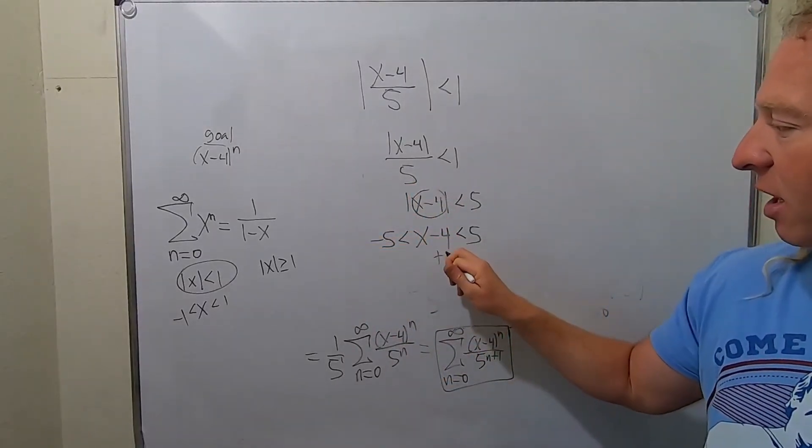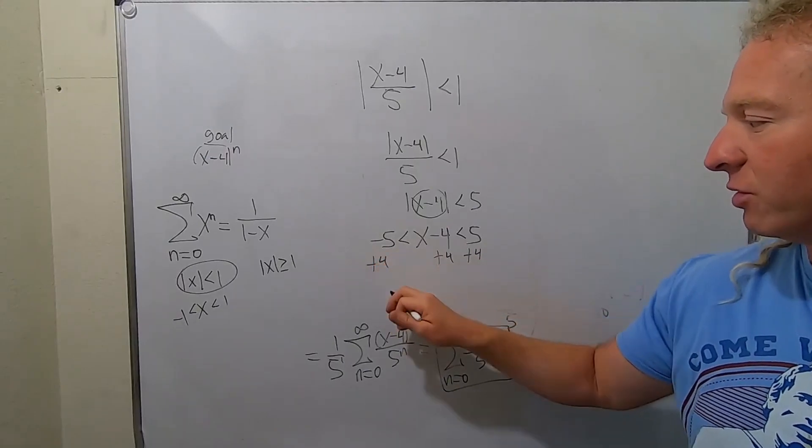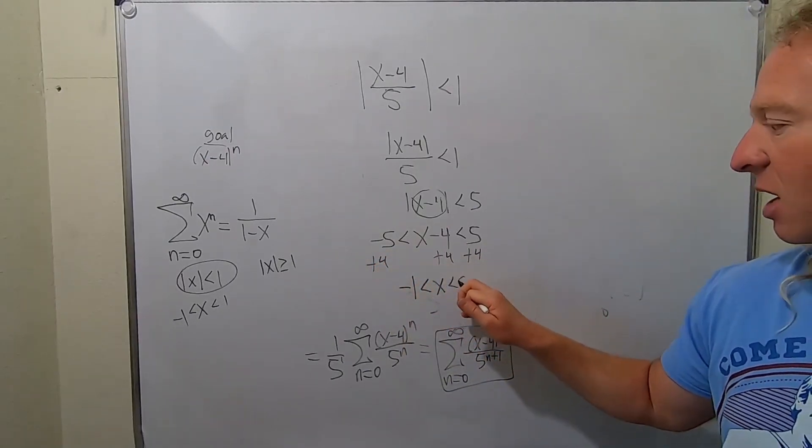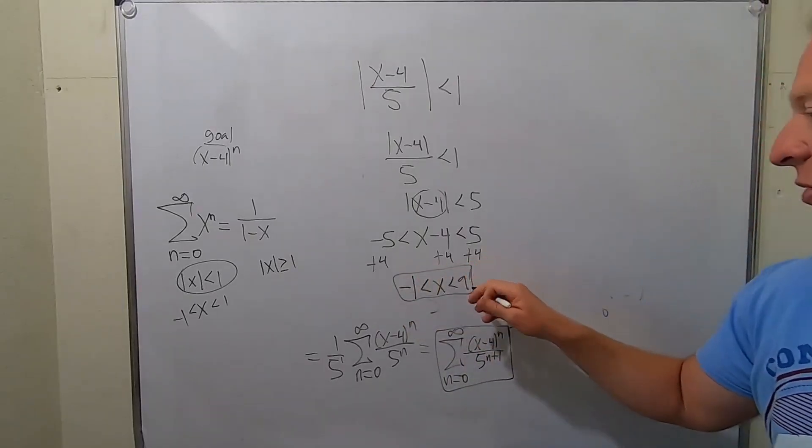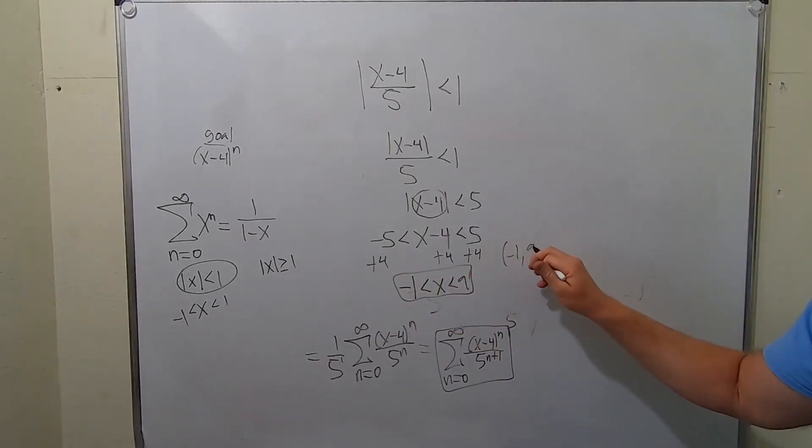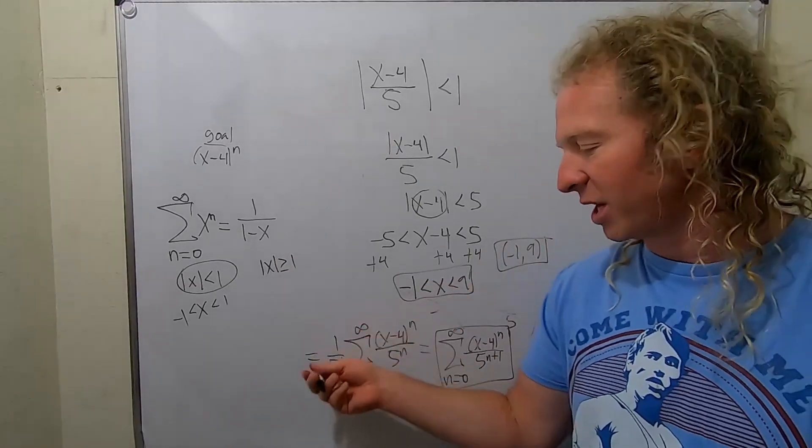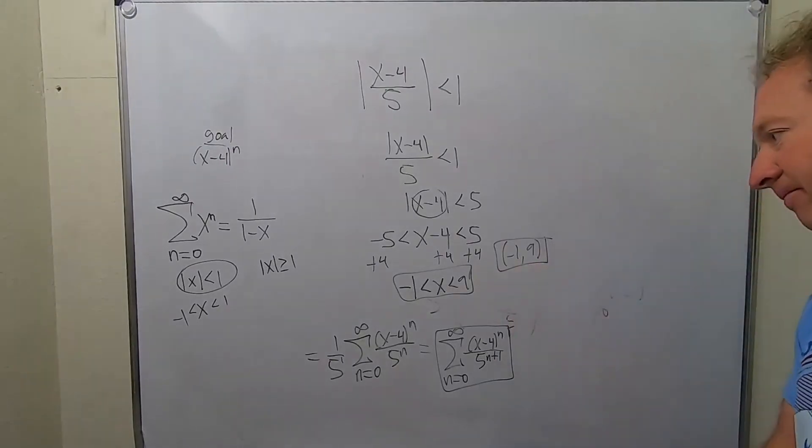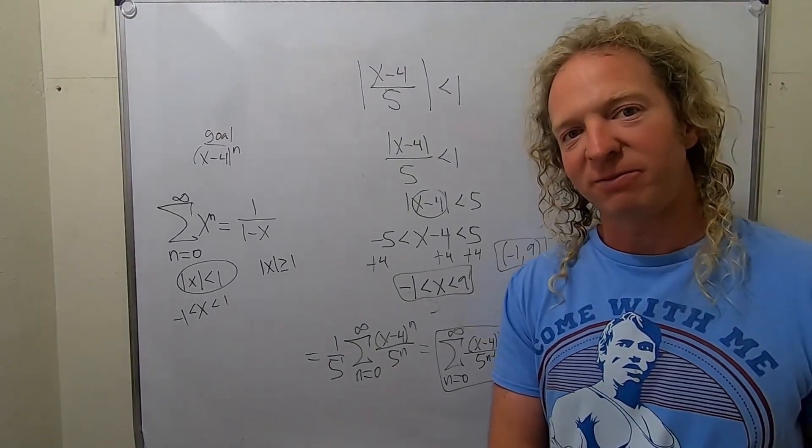Add 4 to all three sides. And we have our beautiful interval of convergence. So we would get negative 1 less than x less than 9. So that's an acceptable answer. Another acceptable answer would be negative 1, 9. This would be the interval of convergence. So our original function, which I erased, is equal to this infinite series whenever x is in this interval. I hope this video has been helpful. Take care.